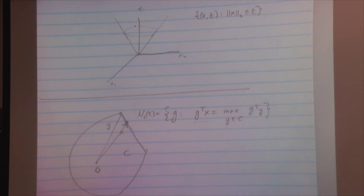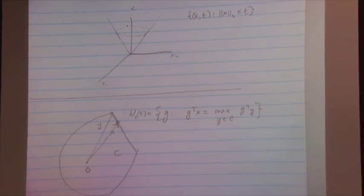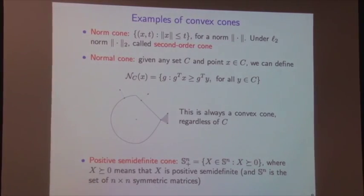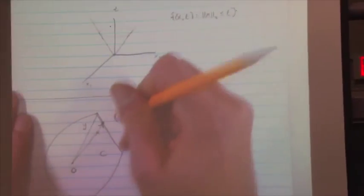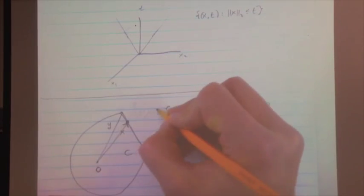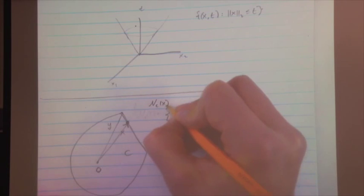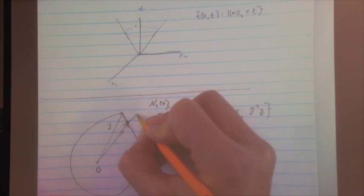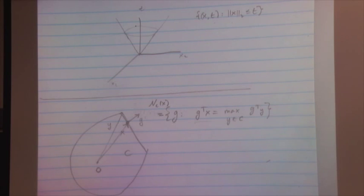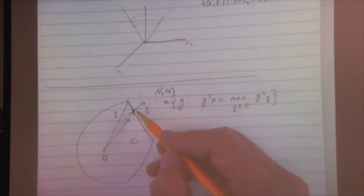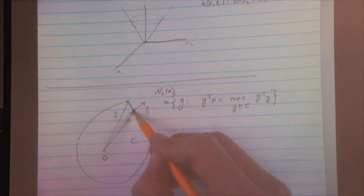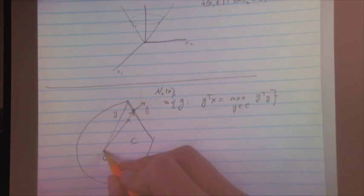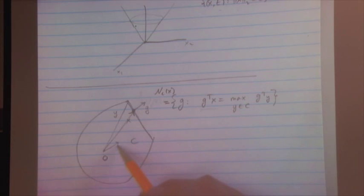Now the good stuff — operations preserving convexity. There are five main ones. First, the intersection of any two convex sets is convex. Second, scaling and translation: if C is convex, then aC + b = {ax + b : x ∈ C} is convex. Third, affine images: if f(x) = Ax + b is affine and C is convex, then f(C) is convex. Fourth, affine pre-images: if D is convex, then f⁻¹(D) = {x : f(x) ∈ D} is convex — f need not be invertible.